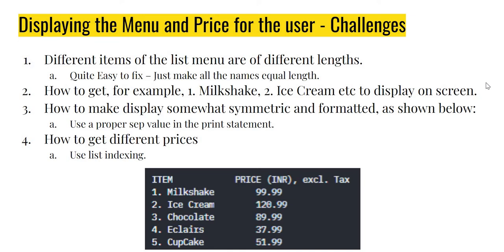The next challenge is how to get things like '1. milkshake', '2. ice cream', and so on to display on screen — we'll come back to that. The third challenge is how to make these display nicely formatted, where all items are in one row and all prices are in another row with a gap between them. We will see that this can be done by using a proper `sep` value in the print statement — by adjusting `sep` we can get a pretty good display.